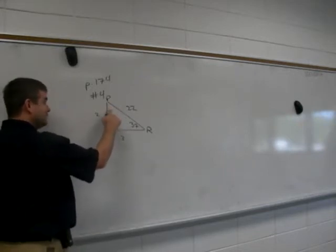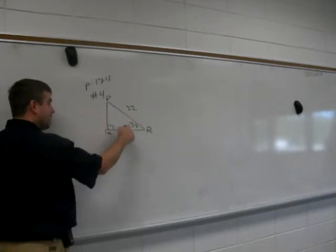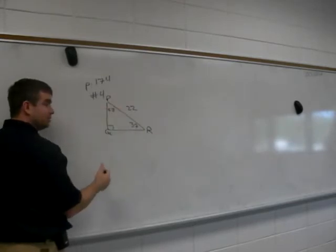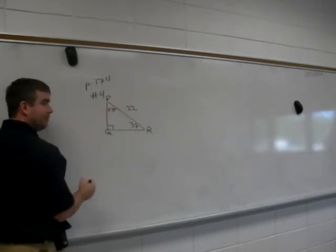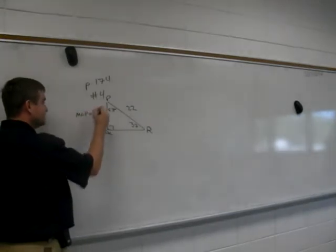The easiest thing to do is find the other acute angle. What is the complement of 37? 53. That's the easiest part. So instantly, we know that part. The measure of angle P is 53 degrees.